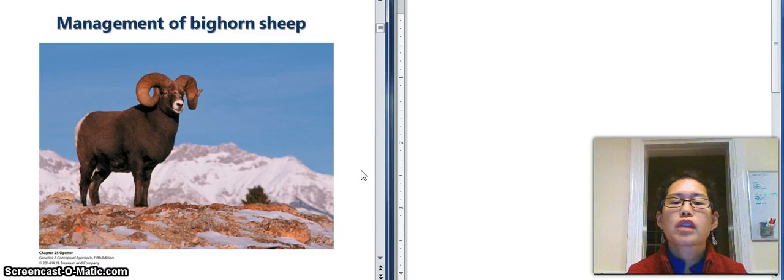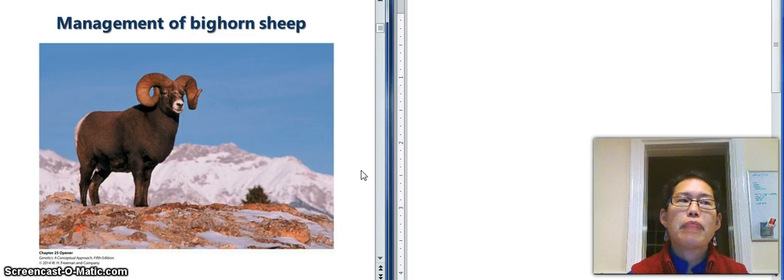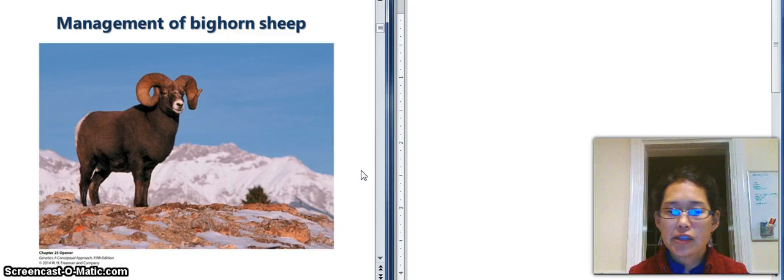And in order to address this population crash, a few more bighorn sheep were airlifted into that wildlife refuge. And now they're doing much better. So population genetics is about explaining why that happened. The increase and the crash and why they're doing much better now with the influx of some new individuals from a different population.